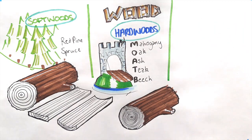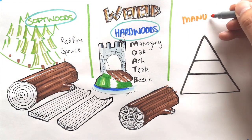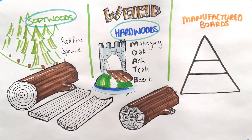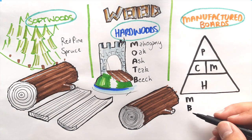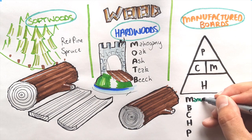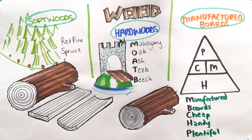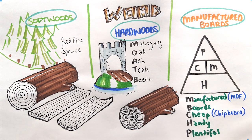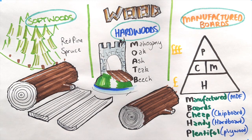Moving on, we also have a visual technique for manufactured boards. Manufactured boards are called that because they aren't natural trees — they begin life as trees but through various processes they end up being man-made boards. We have a little saying: manufactured boards are cheap, handy, and plentiful. They're far cheaper than hardwood, they can come in a wide range of sizes, and they're very easy to get your hands on — you can get MDF at B&Q or local stores very easily.